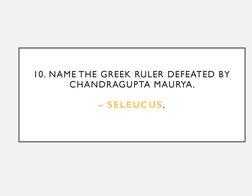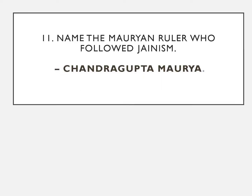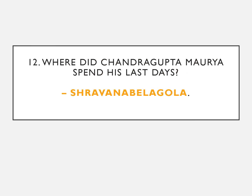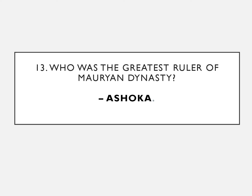Name the Greek ruler defeated by Chandragupta Maurya. The answer: Seleucus. Name the Mauryan ruler who followed Jainism. The answer: Chandragupta Maurya. Where did Chandragupta Maurya spend his last days? The answer: Shravana Belagola. Who was the greatest ruler of the Mauryan dynasty? The answer: Ashoka.